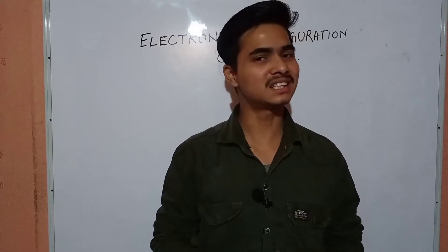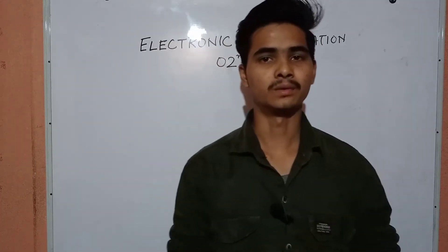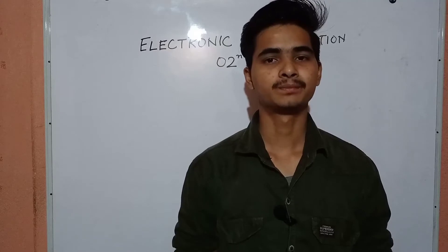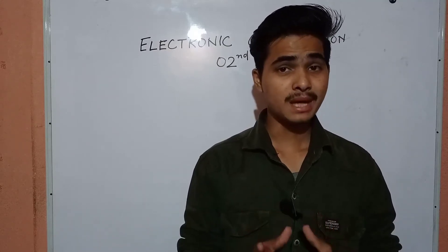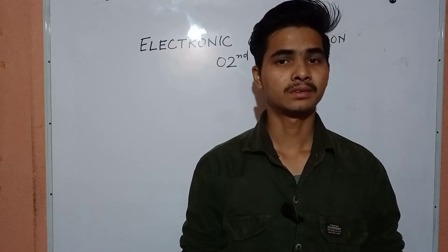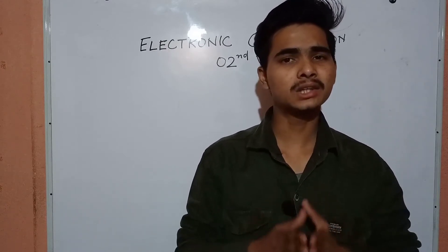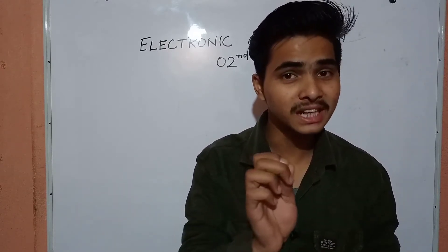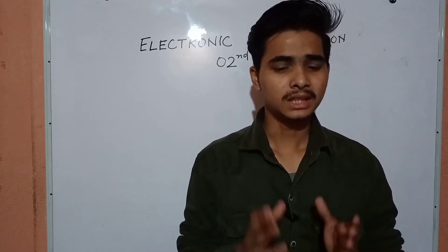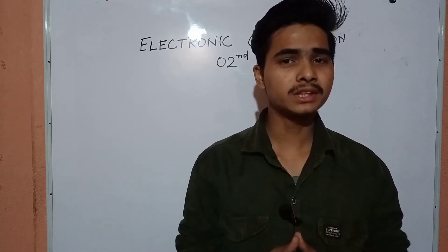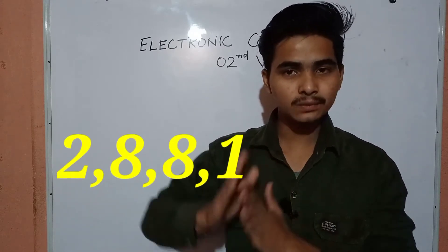In this video, I am going to answer a very good question. Why is the electronic configuration of some elements written the way it is? For example, the electronic configuration of potassium — if you have read — it is 2, 8, 8, 1.